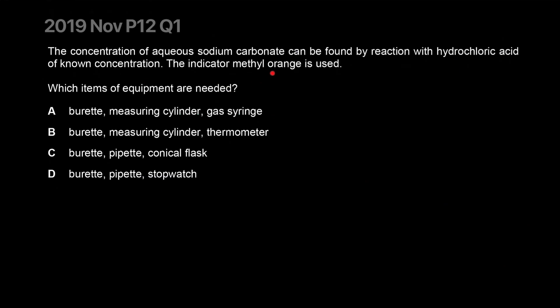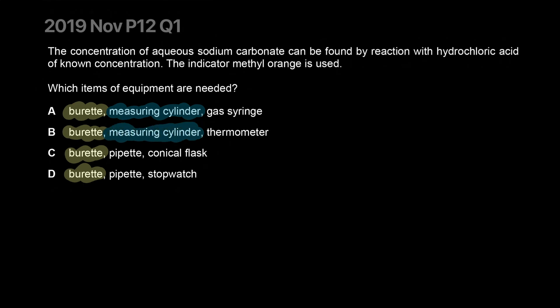The concentration of aqueous sodium carbonate can be found by reaction with hydrochloric acid of known concentration. The indicator methyl orange is used. Which items do you need? Options include burette, measuring cylinder, gas syringe, thermometer, pipette, conical flask. A burette is in all of them. A measuring cylinder is in two of them, but you get a pipette in the other two. Why would you need a pipette?